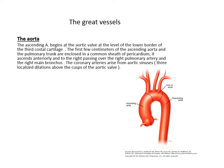First, I will start with the great vessels — the aorta. The aorta is the largest artery of the body. It divides into two great parts: the thoracic aorta and the abdominal aorta. Today I will discuss the thoracic aorta, which divides into three parts: the ascending aorta, arch of the aorta, and the descending aorta. The ascending aorta starts from the aortic valve at the level of the lower border of the third costal cartilage. In the first few centimeters, it's enclosed with the pulmonary trunk in a common sheath of pericardium. It ascends anteriorly and to the right, passing over the right pulmonary artery and right main bronchus. The ascending aorta gives two branches from the aortic sinuses — the right and left coronary arteries, which supply the muscles of the heart.